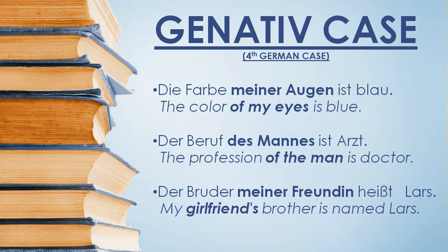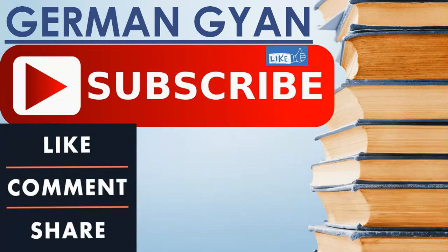The last example: 'Der Bruder meiner Freundin heißt Lars' — my girlfriend's brother's name is Lars. Here we are talking about the girlfriend's brother, so we use 'meiner' because 'Freundin' is feminine.